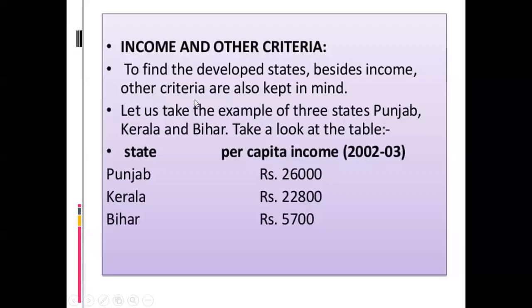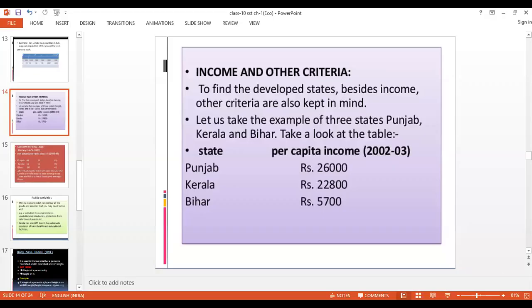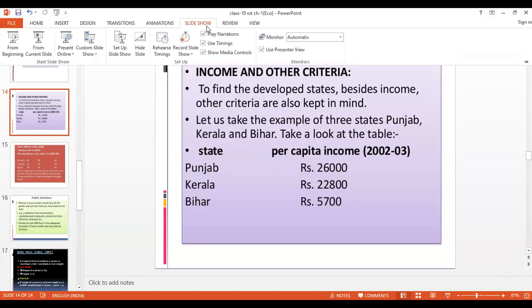When we looked at individual aspirations and goals, we found that people not only think of better income but also have goals such as security, freedom, respect for others, equal treatment, etc. Similarly, when we think of a nation or a region, we may think of other quality things besides income — things which matter a lot in our life.